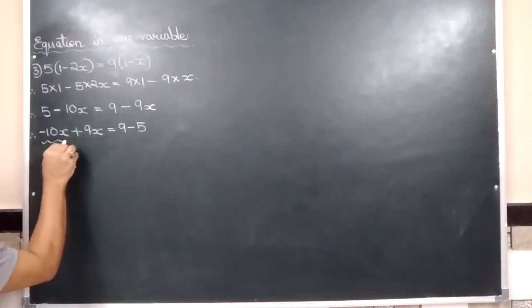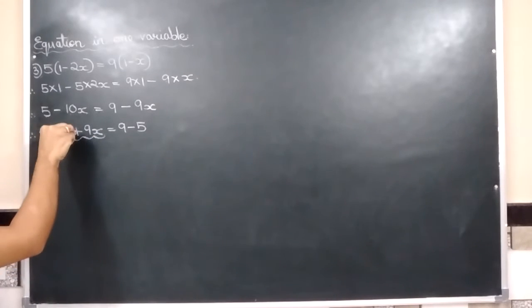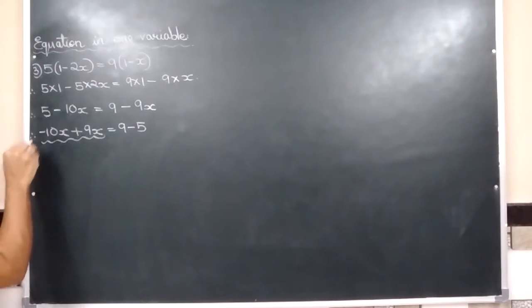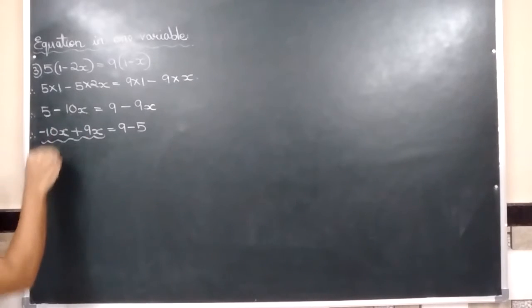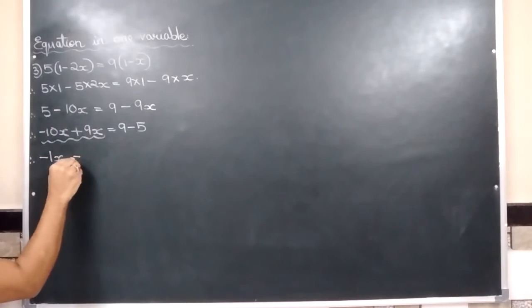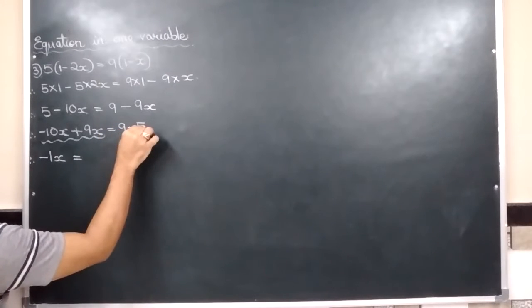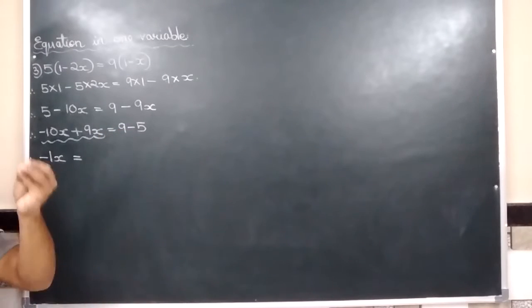Now integers rule, when one number is positive and another number is negative, put the sign of greater number and always subtract the number. 10 minus 9 is 1x brought down. Is equals to 9 minus 5. Third standard or second standard.